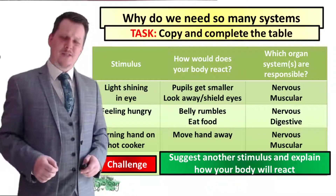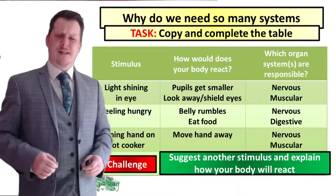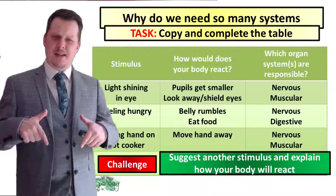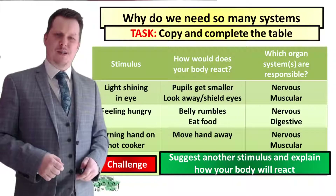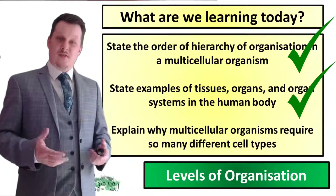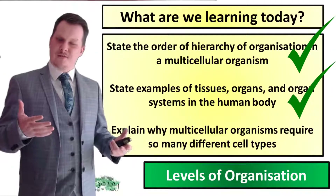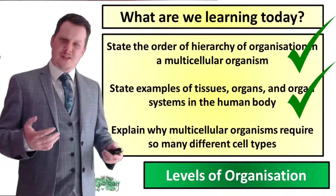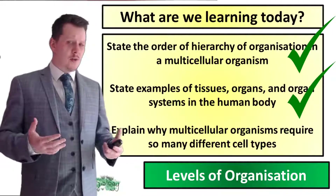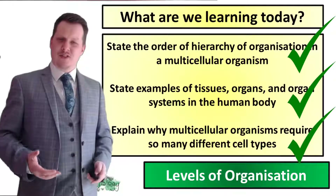Did you suggest any other stimuli? If you did, I'd like to hear about it down in the comments below. So now we've explained why we need so many different cell types — it's so we can respond to all these different stimuli.